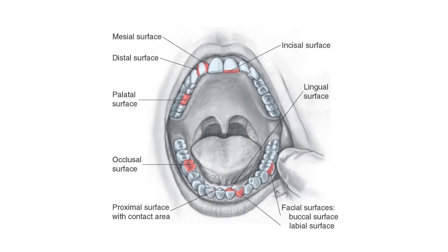Tooth surfaces are named according to their positions and uses. In incisors and canines, surfaces towards the lip are called labial surfaces; in premolars and molars, those facing the cheek are called buccal surfaces. When referred to collectively, they are called facial surfaces. All surfaces facing the tongue are called lingual surfaces. Surfaces of premolars and molars that contact the opposite jaw during closure are called occlusal surfaces, and in incisors and canines these are called incisal surfaces. Surfaces facing the adjoining tooth in the same arch are proximal surfaces — those toward the median line are mesial, and those most distant from the median line are distal.